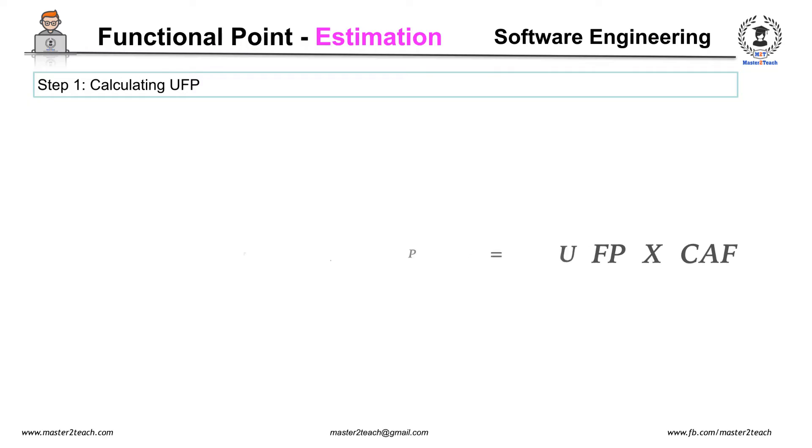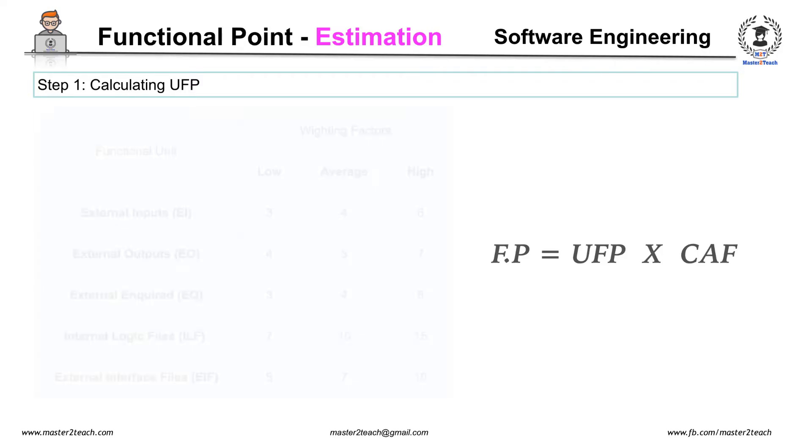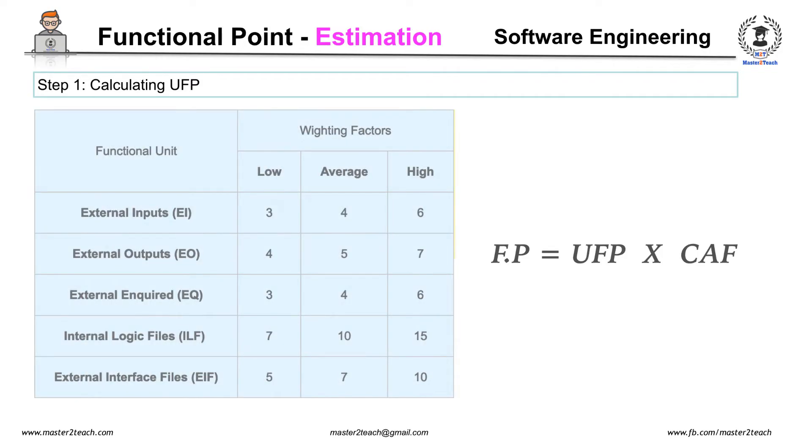Step 1: Calculating Unadjusted Functional Point. Each functional point is ranked according to complexity. There exist predefined weights for each functional point in each category. Organizations that use functional point methods develop criteria for determining whether a particular entry is simple, average, or complex. Nonetheless, the determination of complexity is somewhat subjective.